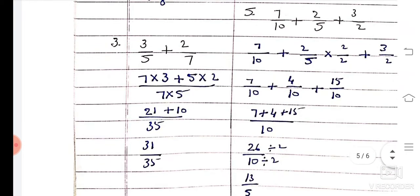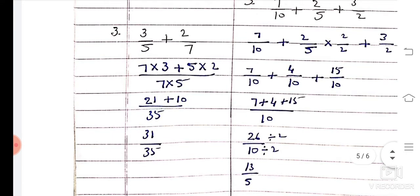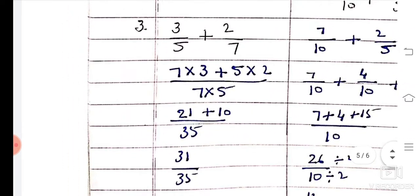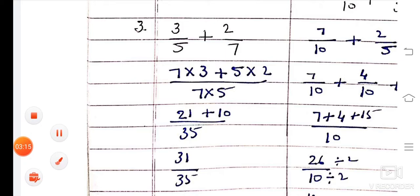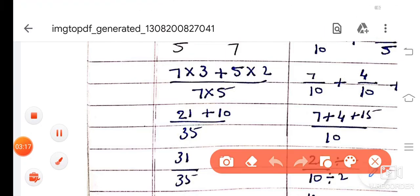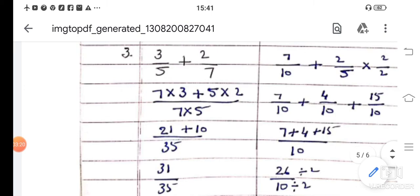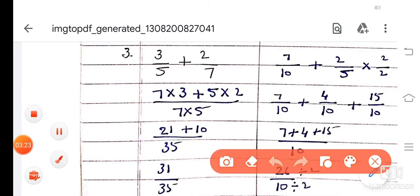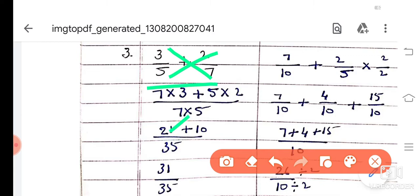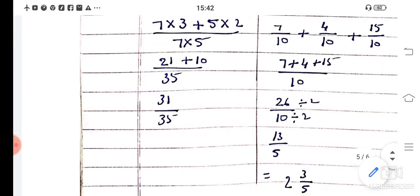Question number 3: 3 by 5 plus 2 by 7 is here. You have to do cross multiplication for this. 7 into 3 plus 5 into 2, whole divided by 5 into 7. 7 threes are 21 plus 5 twos are 10, whole divided by 7 fives are 35. So 21 plus 10 is 31 divided by 35.